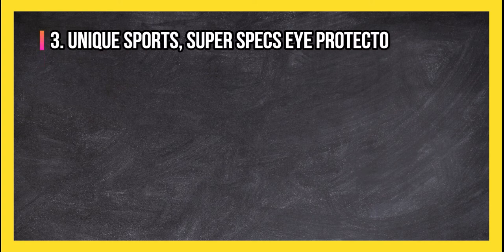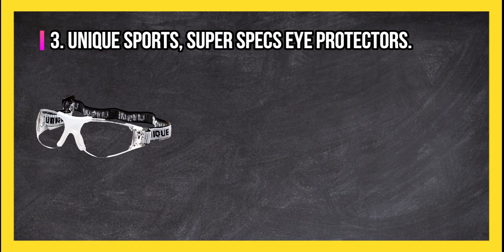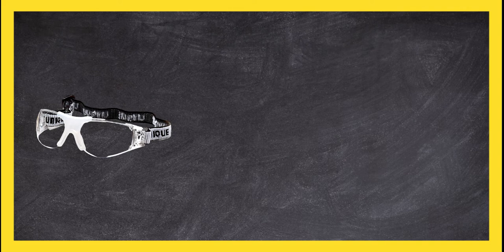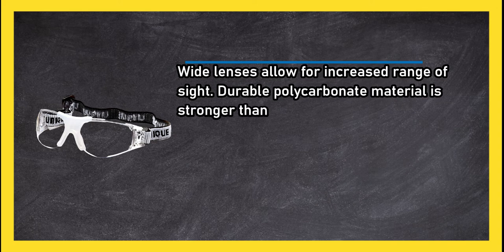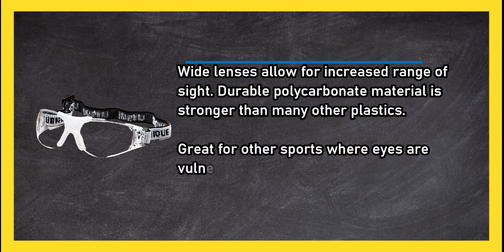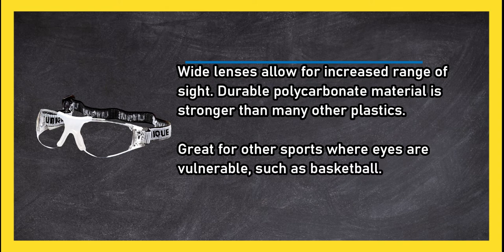At number 3, Unique Sports Super Specs Eye Protectors. Wide lenses allow for increased range of sight. Durable polycarbonate material is stronger than many other plastics. Great for other sports where eyes are vulnerable, such as basketball.